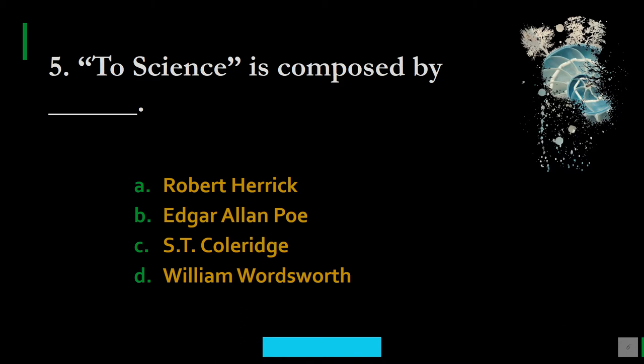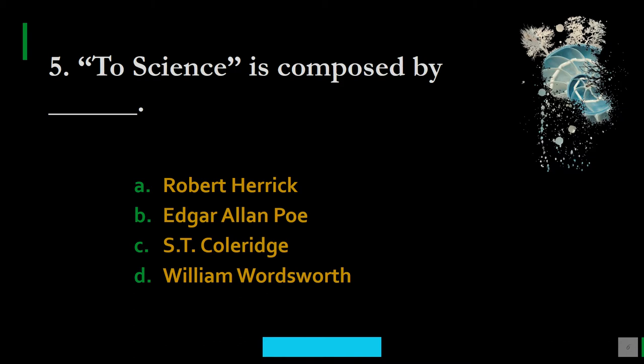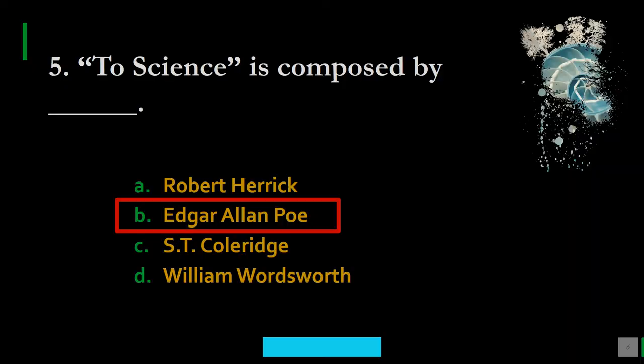Question 5: To Science is composed by whom? Options are A. Robert Herrick, B. Edgar Allan Poe, C. S.T. Coleridge, D. William Wordsworth. The correct option is B — Edgar Allan Poe composed To Science. Students generally know Edgar Allan Poe as a short story writer who made many experiments in the genre of short story, but he also composed sonnets, including a fine sonnet called To Science.